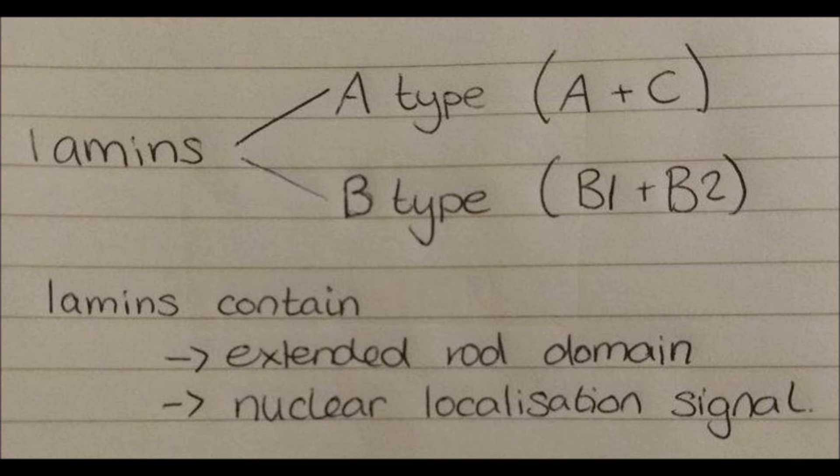Lamins are type 5 intermediate filaments and the lamins are the type of intermediate filaments which are closely associated with the nucleus.